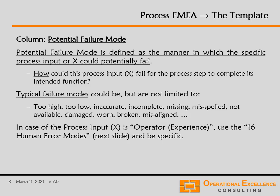The situation becomes a little more difficult if the input is a person — an operator, for example — and the attribute is experience. In that case, the failure mode is not that the operator is inexperienced, but that the operator or person makes a mistake in this process step, which may lead to our process not delivering the right results. For that, we have our 16 human error modes, because there are 16 different types of mistakes a person can make. We'll dig deeper into those in the section on mistake proving.